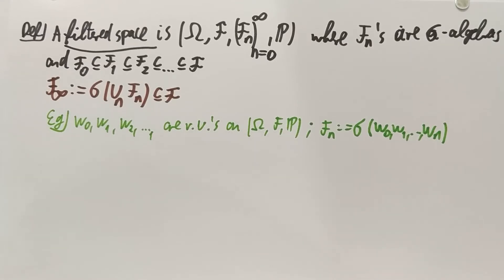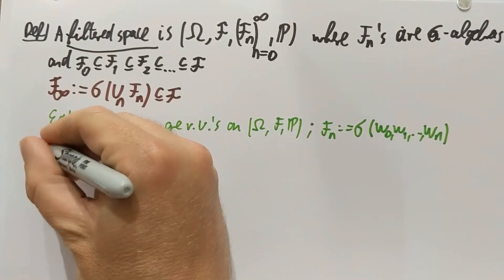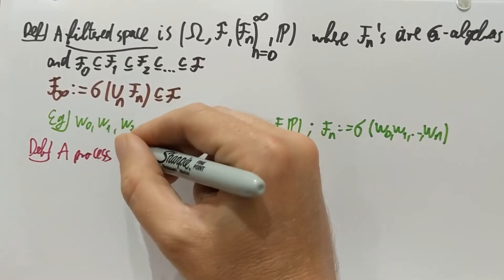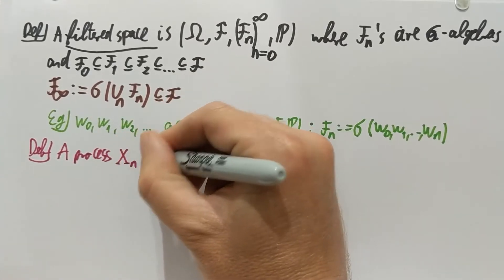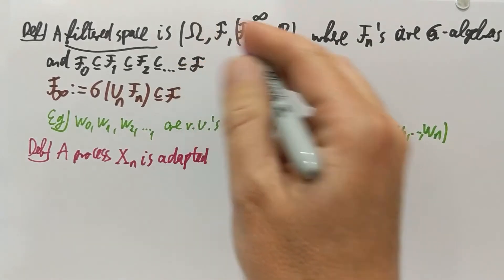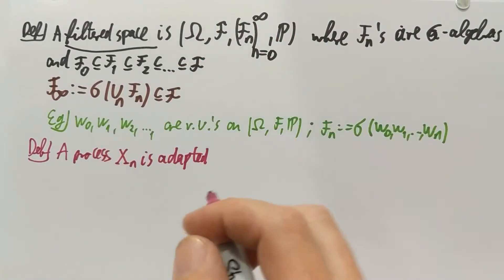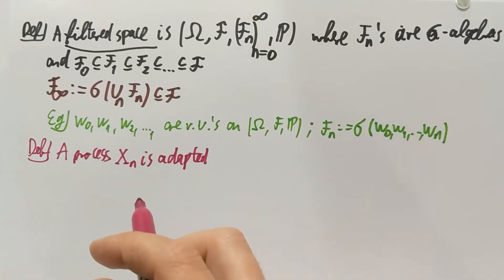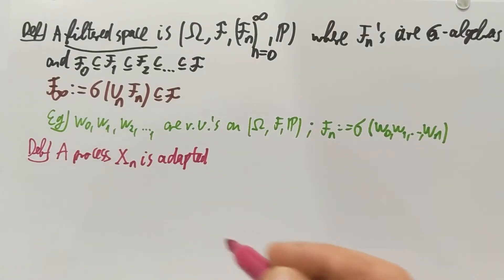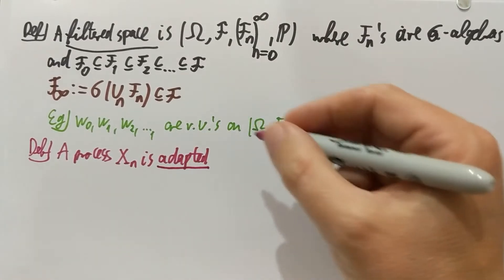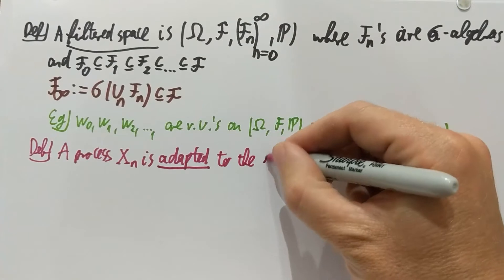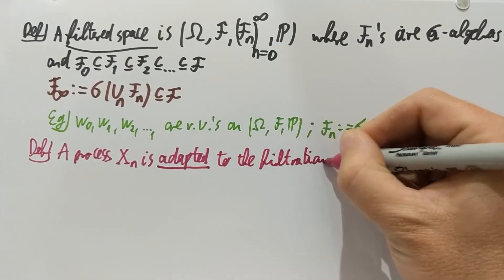I need to make one more definition before I can turn to martingales. A process X_n on a probability space is called adapted. So I'm in the situation of the previous definition — I have a filtered space, and in that filtered space I have a process X_n, which is just a bunch of random variables indexed by n, where n goes from 0 to infinity. The process is adapted to the filtration (Ω, F, F_n, P), or in short, the filtration F_n,